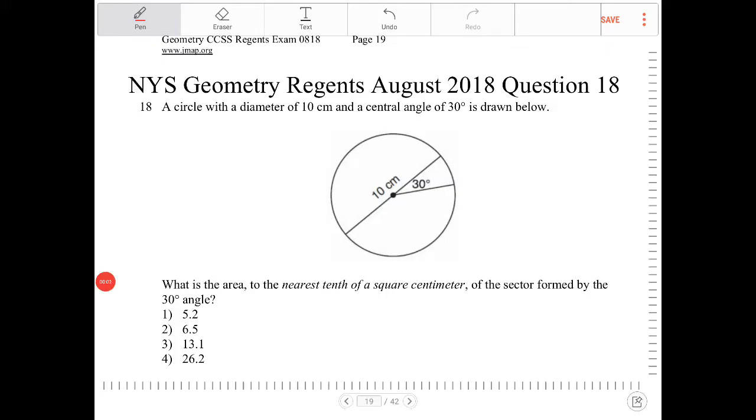A circle with a diameter of 10 centimeters and a central angle of 30 degrees is drawn below. What is the area, to the nearest tenth of a square centimeter, of the sector formed by the 30 degree angle?